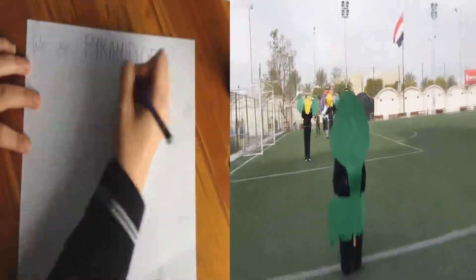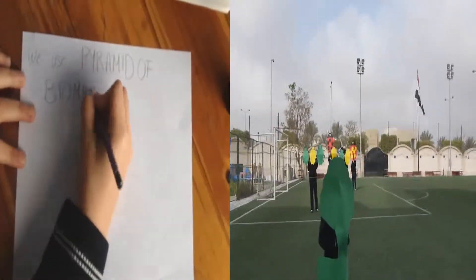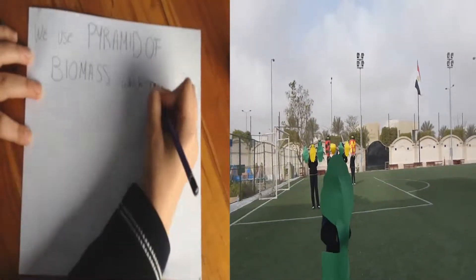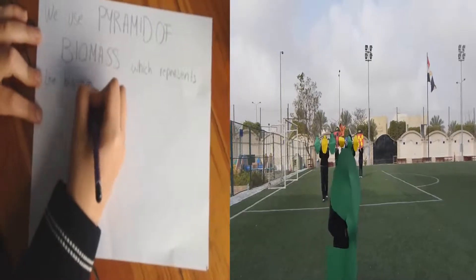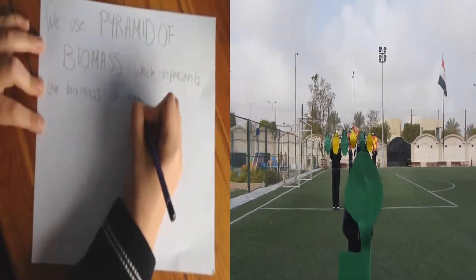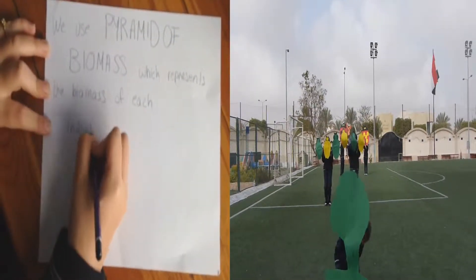So to solve the problems of pyramids of number, we use a pyramid of biomass. It represents the biomass of each individual, so it ends up looking like a pyramid.